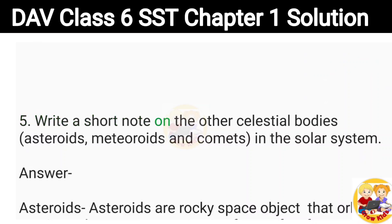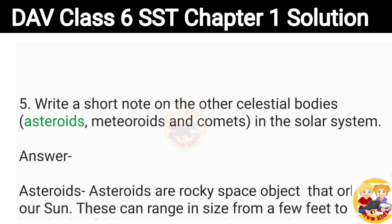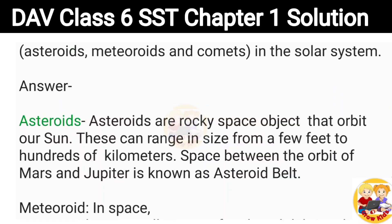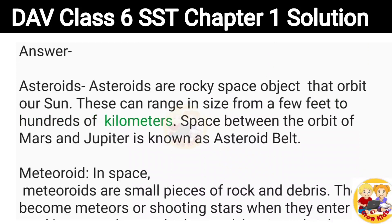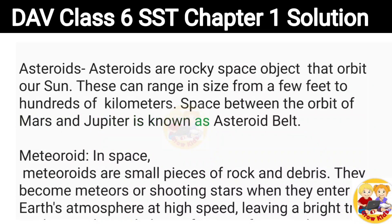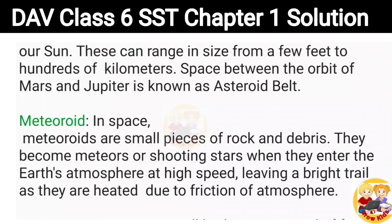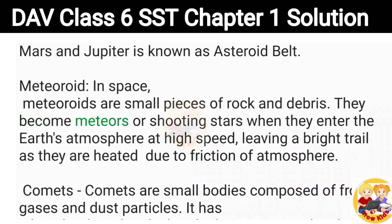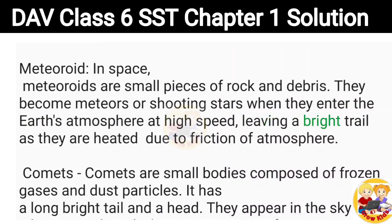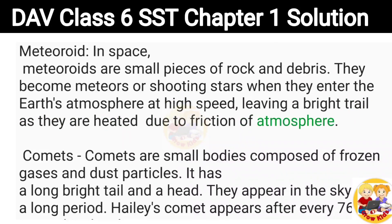5. Write a short note on the other celestial bodies — asteroids, meteoroids and comets in the solar system. Asteroids: Asteroids are rocky space objects that orbit our Sun. These can range in size from a few feet to hundreds of kilometers. Space between the orbit of Mars and Jupiter is known as asteroid belt. Meteoroid: In space, meteoroids are small pieces of rock and debris. They become meteors or shooting stars when they enter the Earth's atmosphere at high speed, leaving a bright trail as they are heated due to friction of the atmosphere.